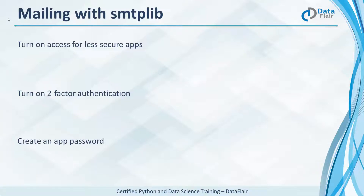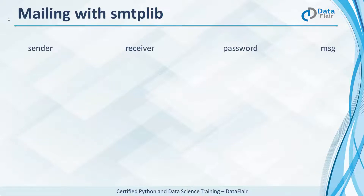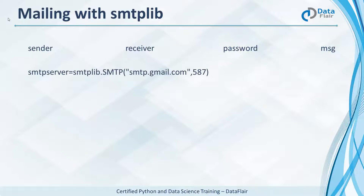We'll create one for Windows PCs. What we do with this module is that we have sender and receiver strings, a string holding the password to the sender, and one holding the message to send. We create a server object using port 587 and the domain smtp.gmail.com.